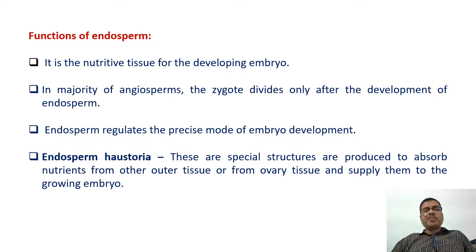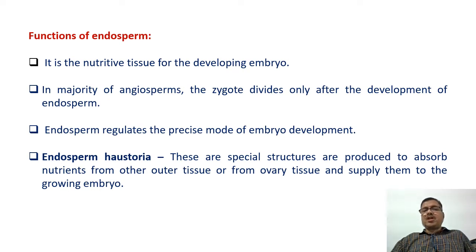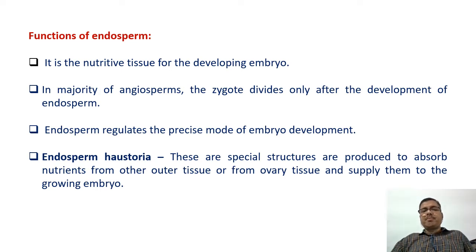Endosperm haustoria are special structures that are produced to absorb nutrients from outer tissue or from ovary tissue and supply them to the growing embryo.